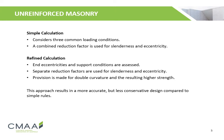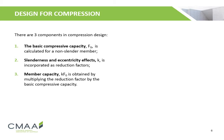There are two types of calculations when it comes to designing for compression: simple and refined. In the simple calculation, three common loading conditions are considered, and a combined reduction factor is used for slenderness and eccentricity. In the refined calculation, the end eccentricities and support conditions are assessed using separate reduction factors for slenderness and eccentricity. Provisions are made for double curvature and resulting higher strength, giving a more accurate but less conservative design compared to the simple rules.